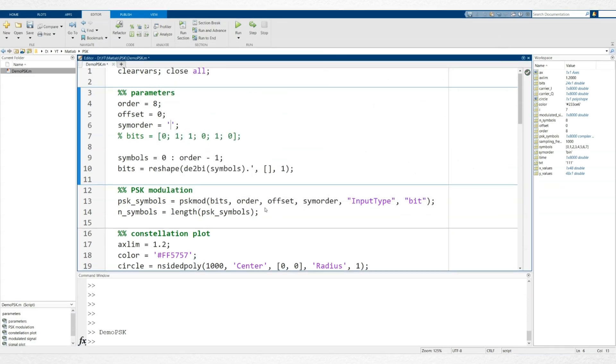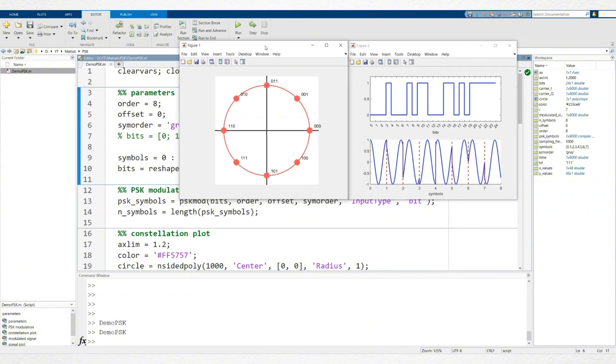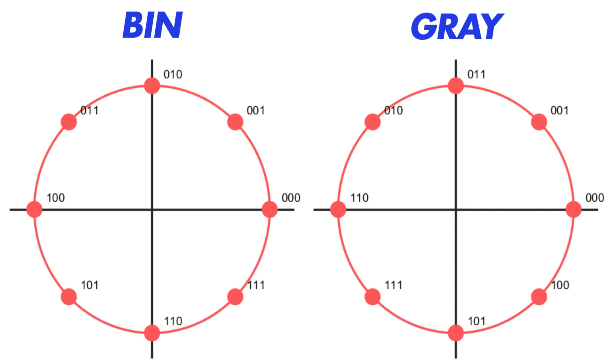As you can see, binary mapping assigns bits to states in sequential integer order. In contrast, gray mapping is structured so that each successive state differs by only one bit, reducing the likelihood of errors during transmission.